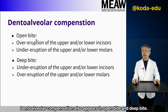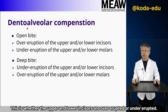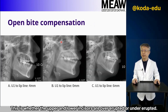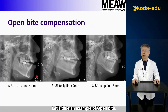Dental alveolar compensation also appears in open bite and deep bite — specifically whether the upper and lower incisors are over-erupted or under-erupted. Let's take an example of open bite.